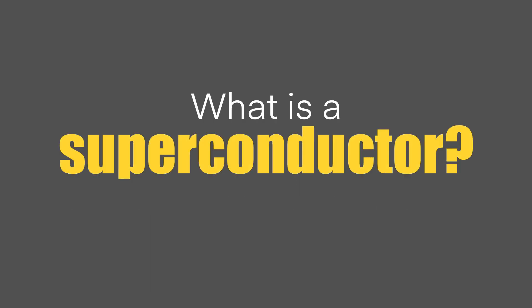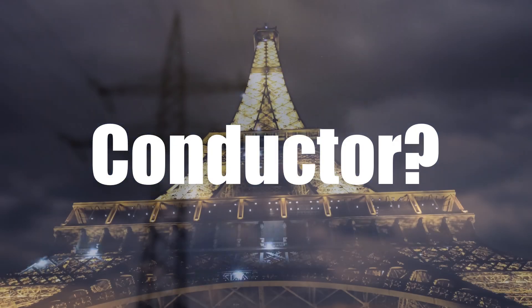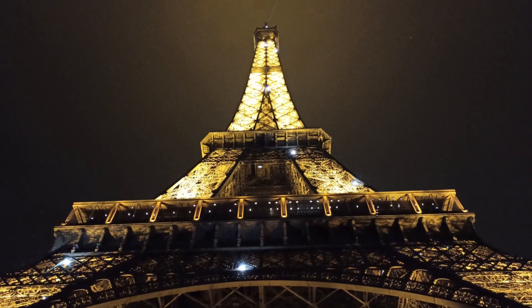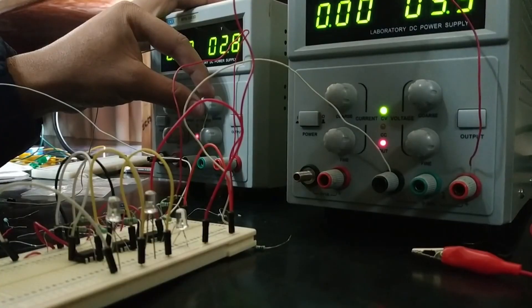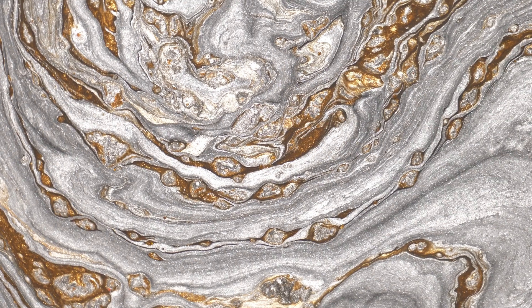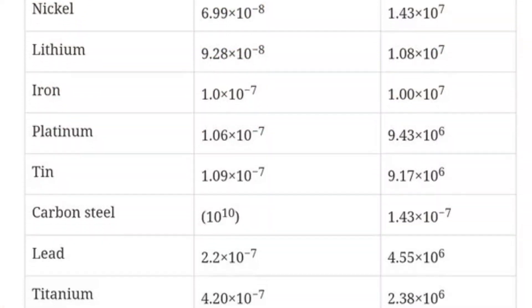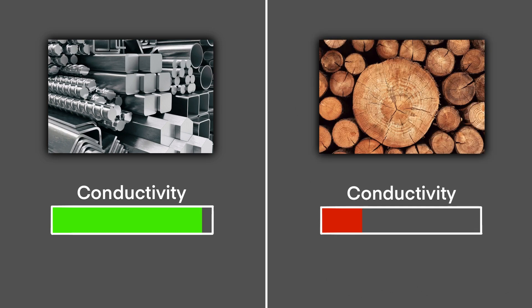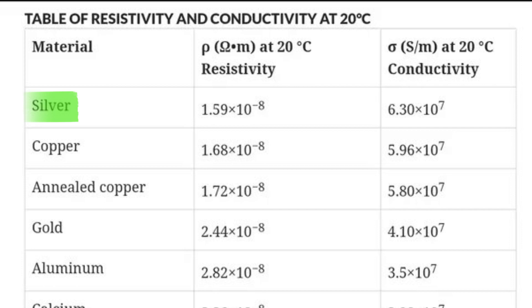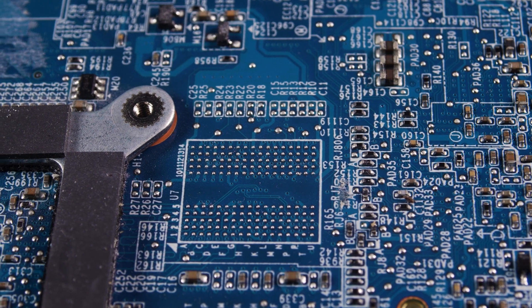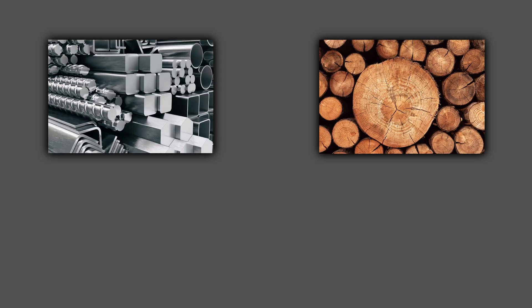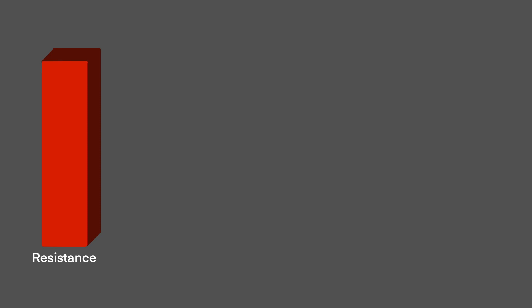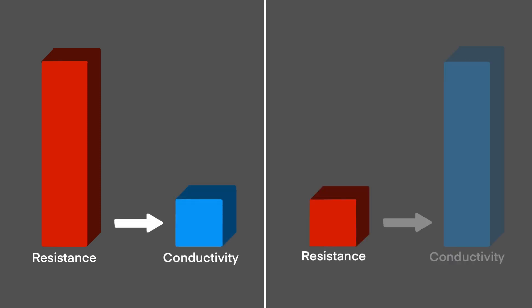But what even is a superconductor? First we have to understand what a conductor is. A conductor is an object or material that allows a flow of charge to pass through — think of wires, for example. Through wires, electrons flow to generate an electrical current. Some materials are better conductors than others. Metals are good conductors compared with wood or glass. Silver is the most conductive material, but mostly copper or aluminium are used in electronics because of the high price of silver. The difference in conductivity is due to resistance — high resistance means lower conductivity, and low resistance means high conductivity.